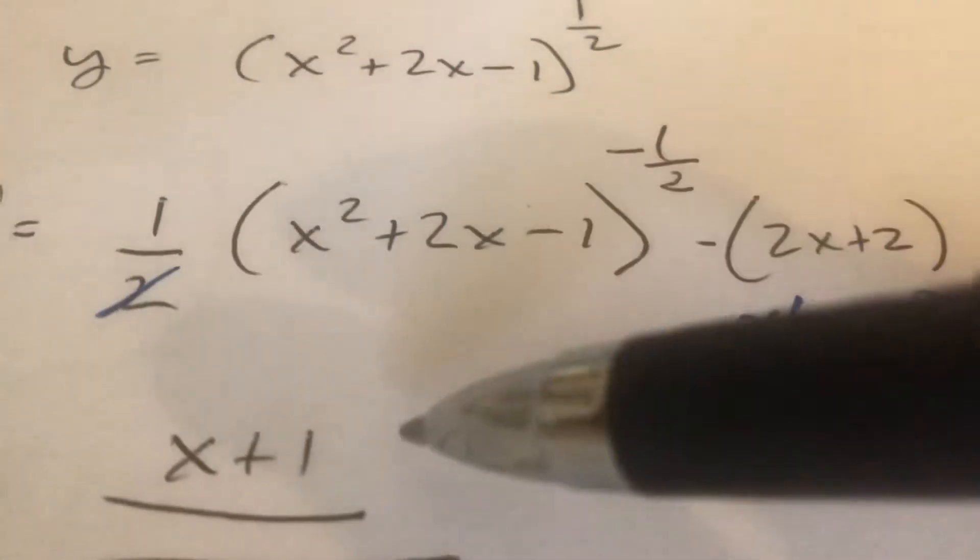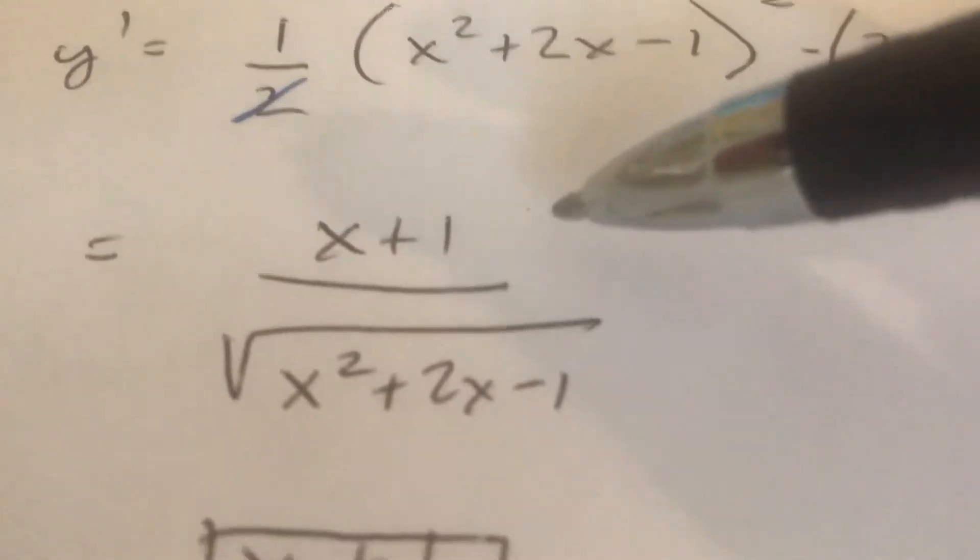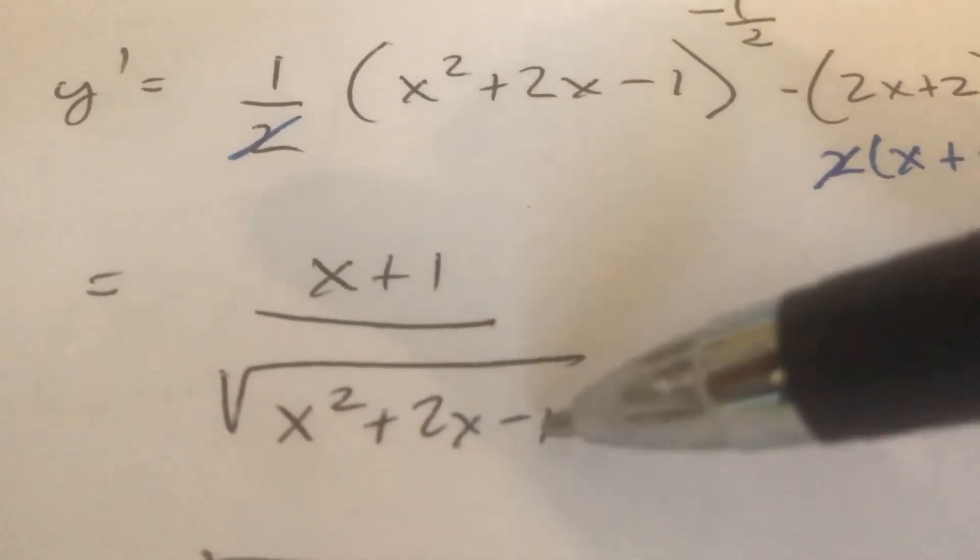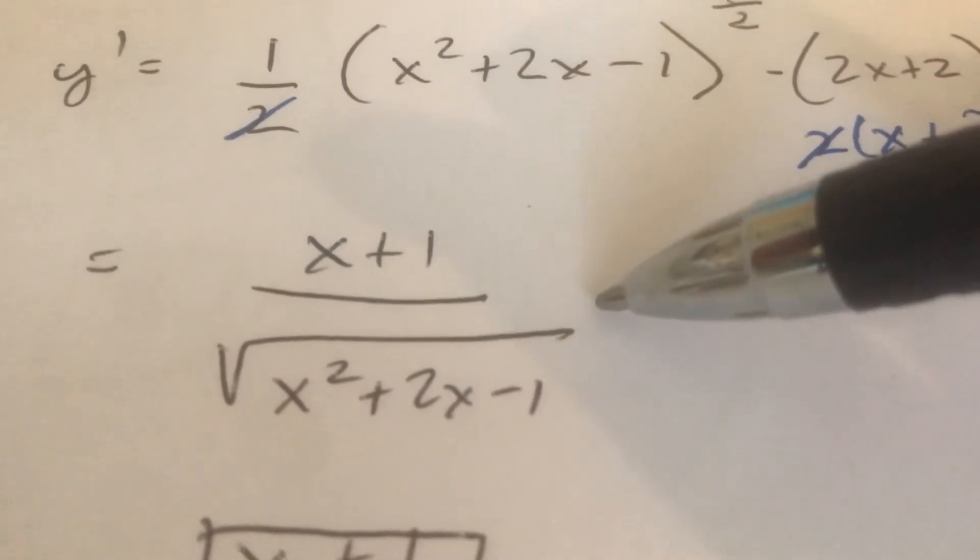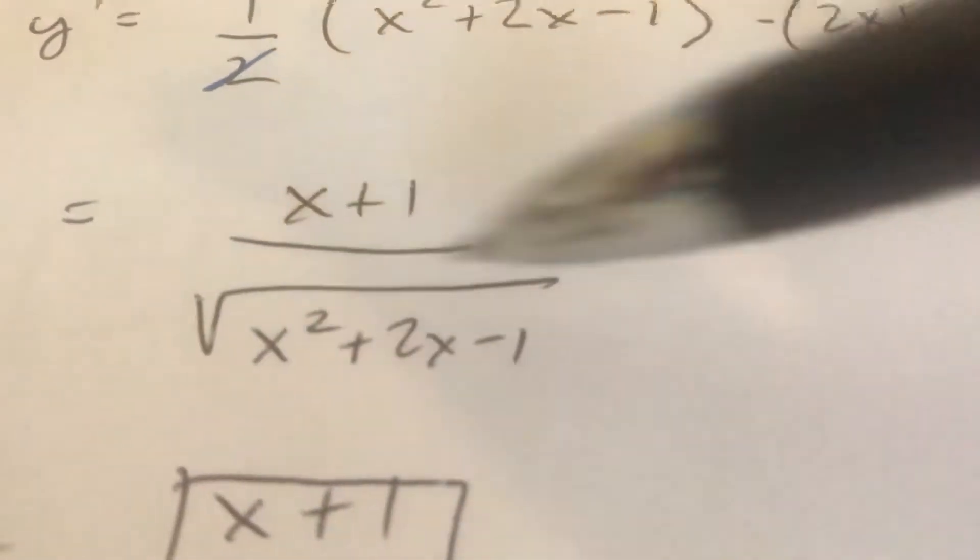And so then I'm left with x plus 1 on the top and then I bring the x squared plus 2x minus 1 to the negative 1 half at the bottom but I write it with the square root.